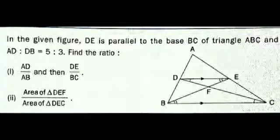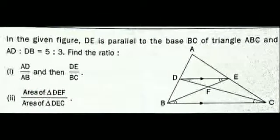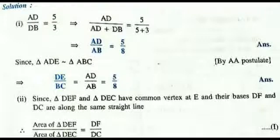Next question: In the given figure, DE is parallel to BC, and AD to DB equals 5 to 3. Find the ratio AD by AB, then DE by BC. Since AD by DB equals 5 to 3, AD equals 5 units and BD equals 3 units, so AB equals 8 units. Therefore AD by AB equals 5 by 8. Since triangle ADE is similar to triangle ABC by AA, DE by BC equals AD by AB equals 5 by 8.